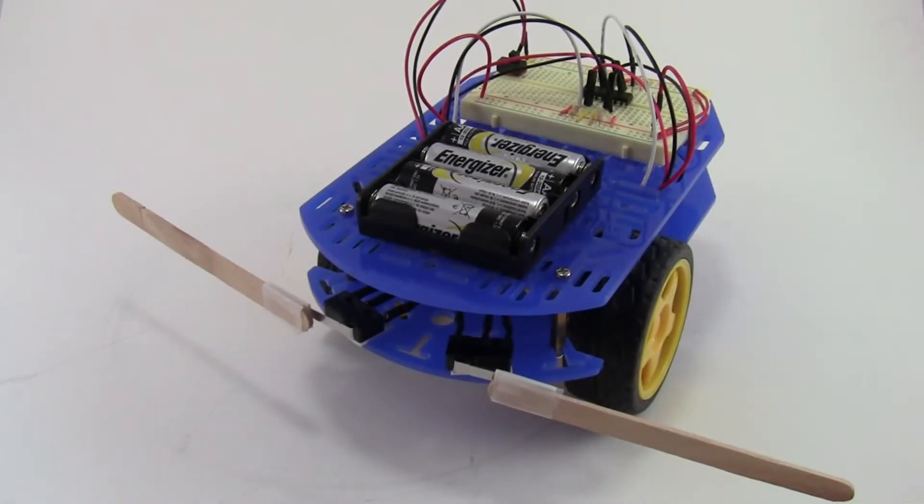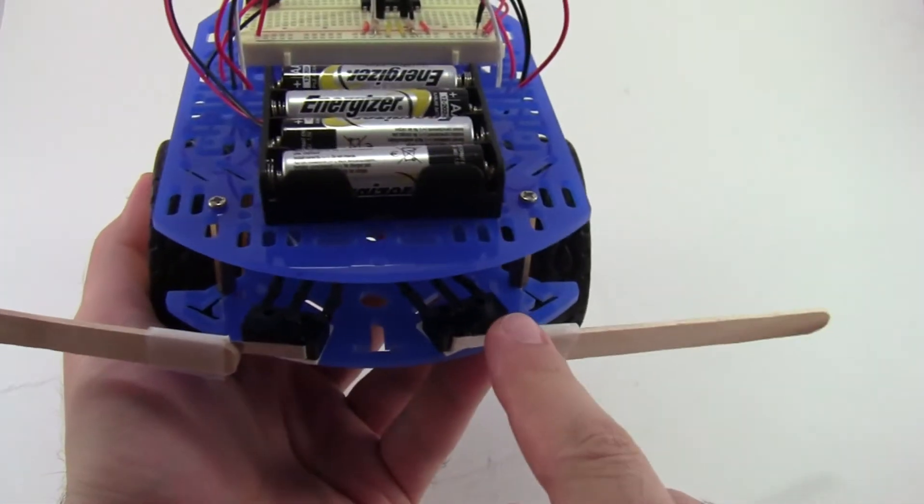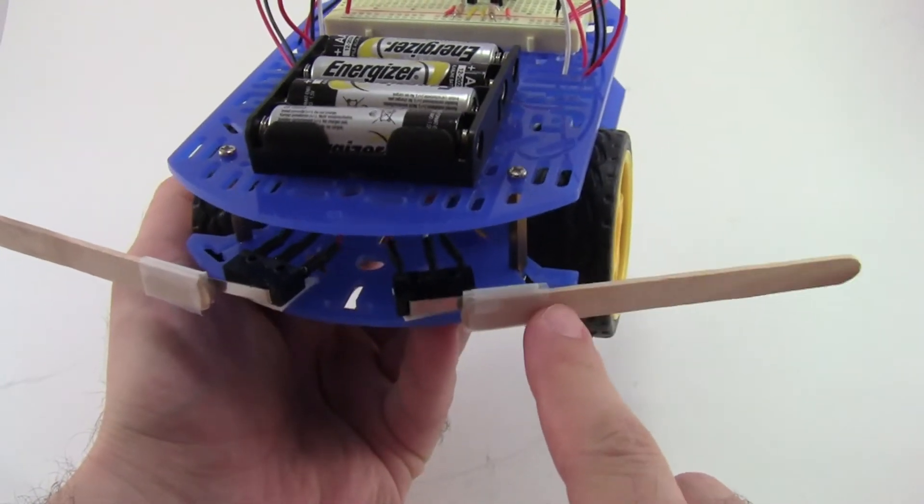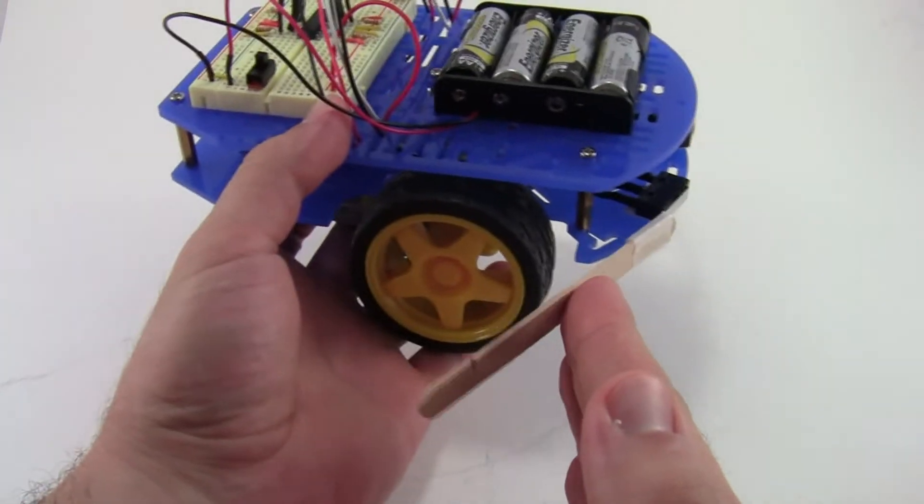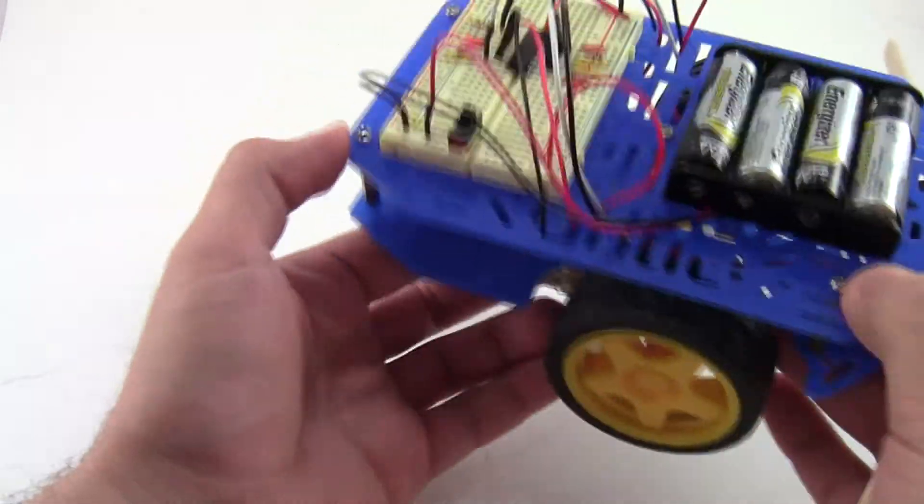Let's take a closer look at how the robot works. You can see I have the robot here, and mounted on the front are two lever switches that act like bump sensors with popsicle sticks attached to them to extend out to the side and act like whiskers. As the robot drives forward, these popsicle sticks will come into contact with obstacles and trigger the lever switch.